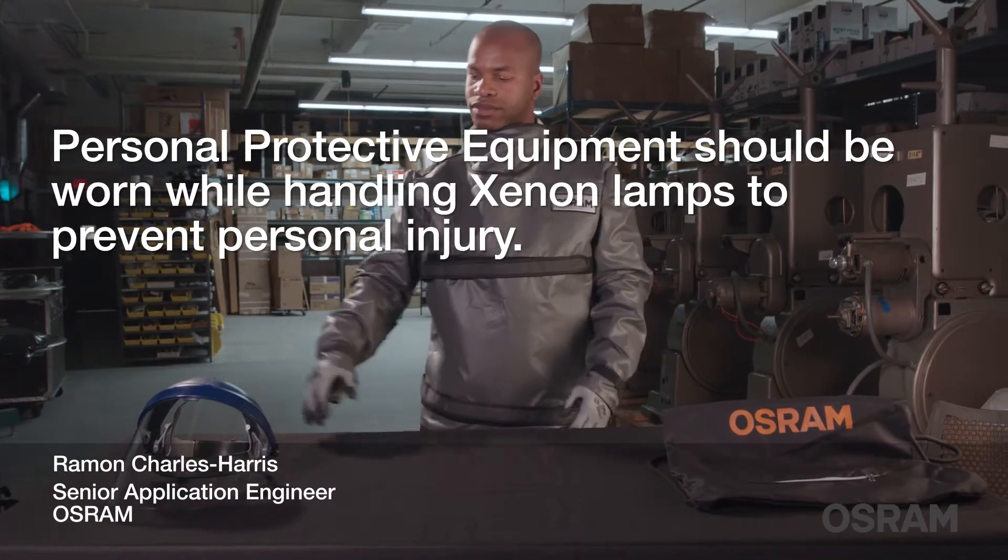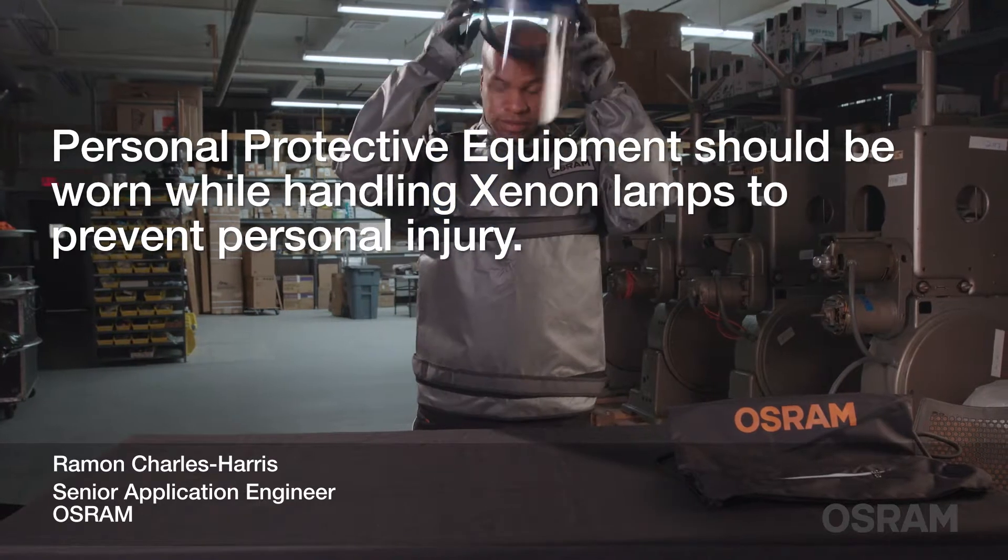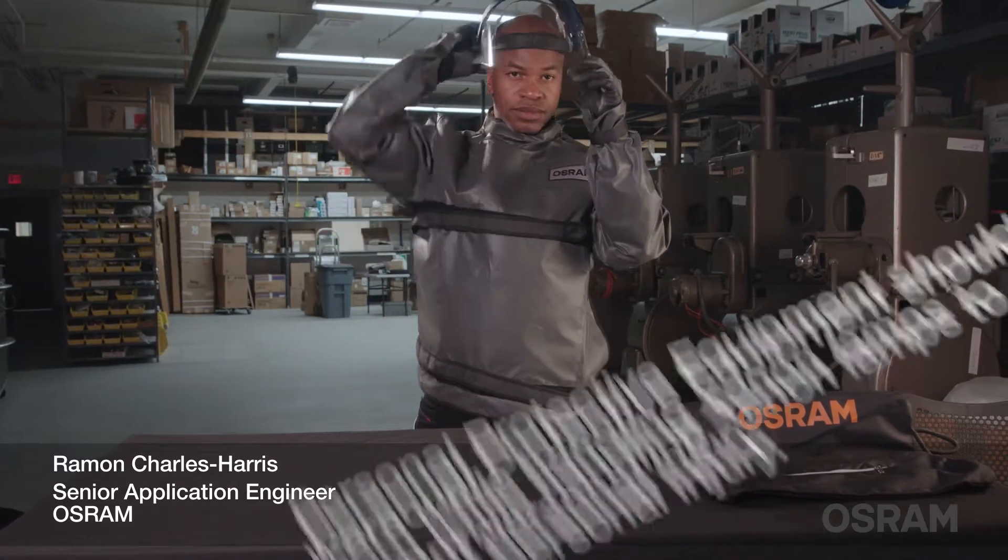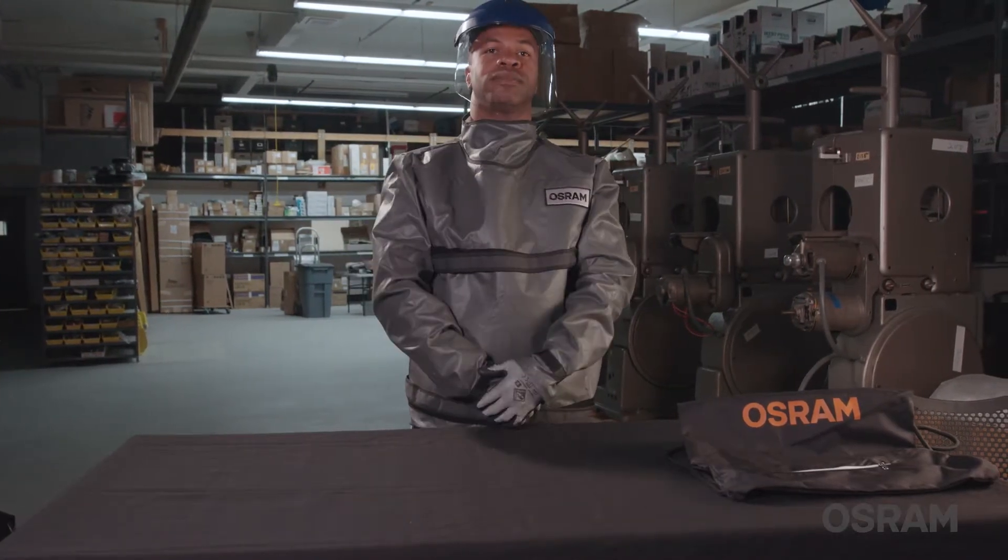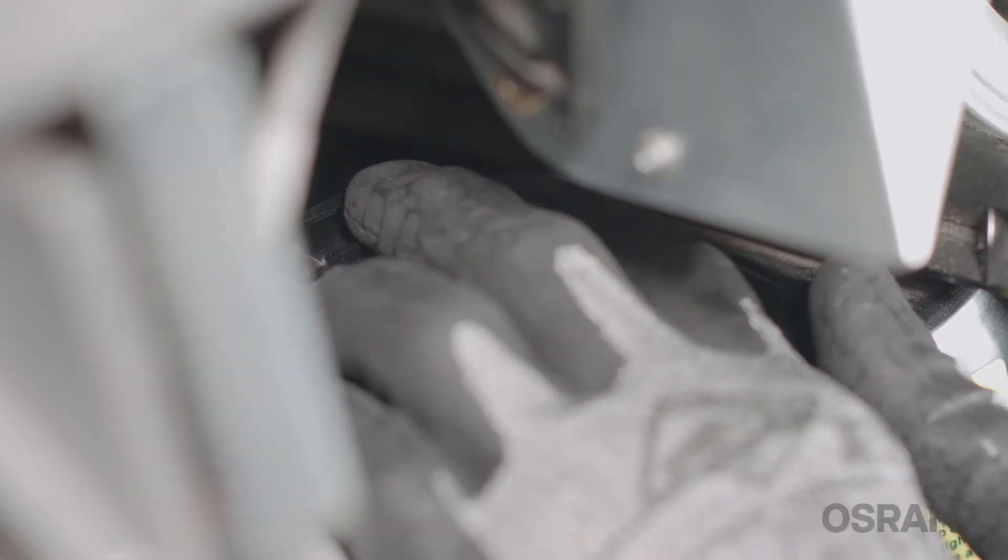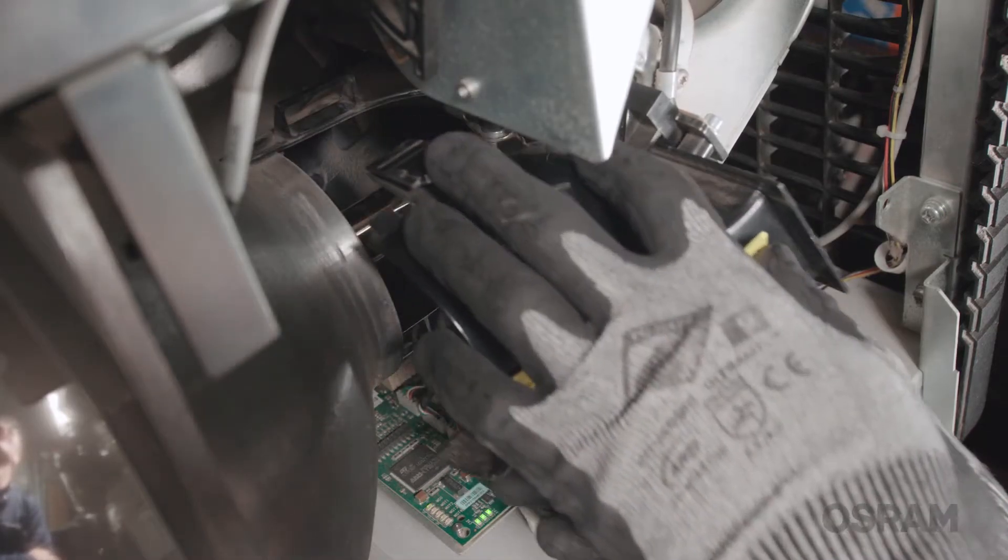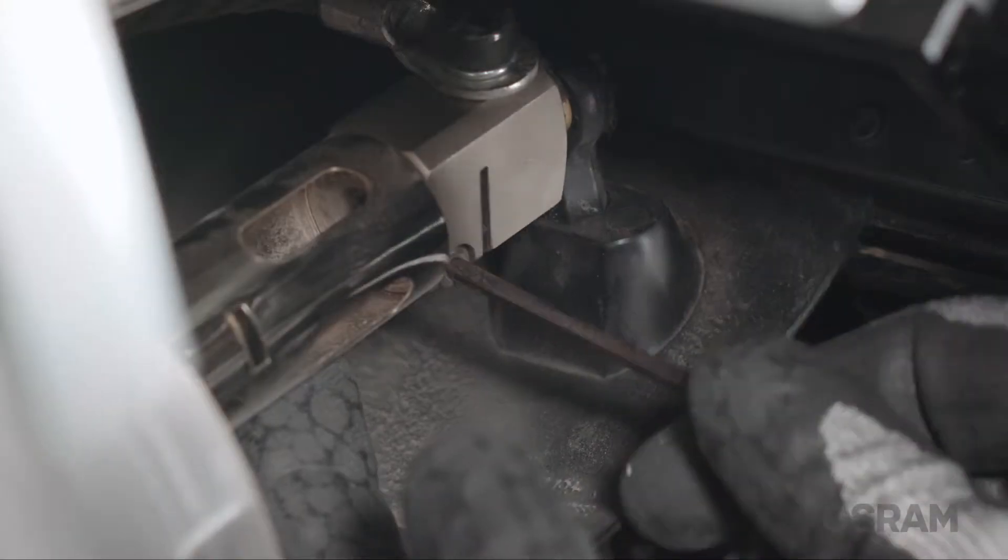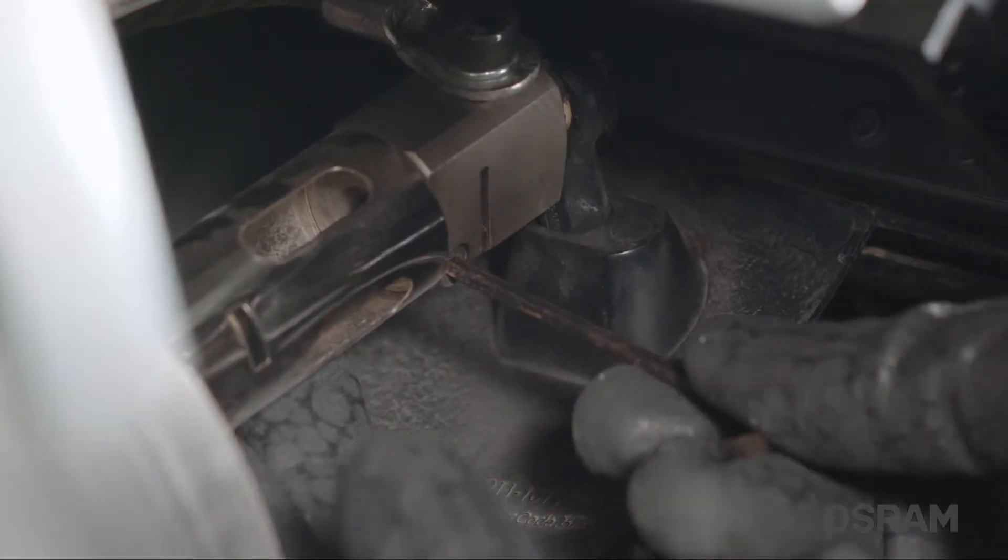Protective equipment should be worn while working with cinema lamps. Failure to do so can result in damage to yourself and the projector. For Christie projectors, remove the front lamp duct to reveal the cathode end of the lamp. Check to make sure the set screw is tight securing the anode connector and then check the cathode connector.